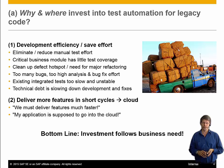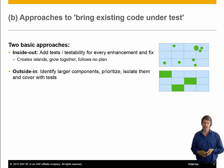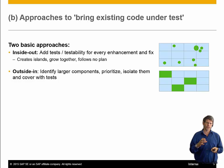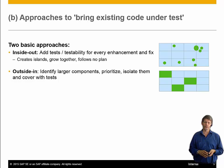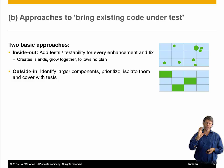The bottom line is: investment follows business need. Now, there are two basic approaches — inside-out and outside-in. The inside-out approach is: for every enhancement and fix you touch, you put a test around it and add testability, creating a little island you can test in isolation. But the trouble is this is expensive. Every borderline you draw is work because you have to cut dependencies and control them to test in isolation, and the more borderlines you draw, the more effort is required.